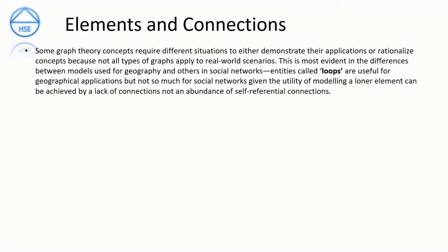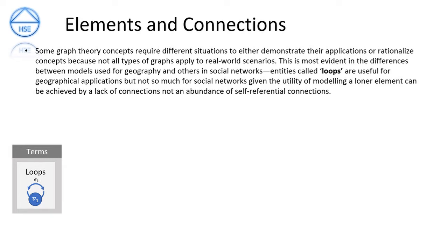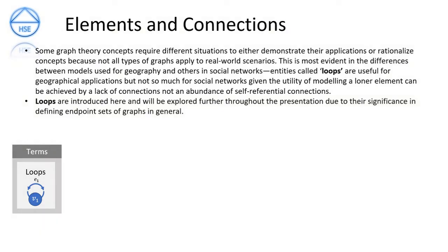Some graph theory concepts require different situations to demonstrate their applications or rationalise concepts, because not all types of graphs apply to real-world scenarios. This is most evident in the differences between models used for geography and those for social networks. Entities called loops are useful for geographical applications, but not so much for social networks — modeling a loner element can be achieved by a lack of connections, not an abundance of self-referential connections. We'll go through the term 'loop' in more detail later in this presentation.